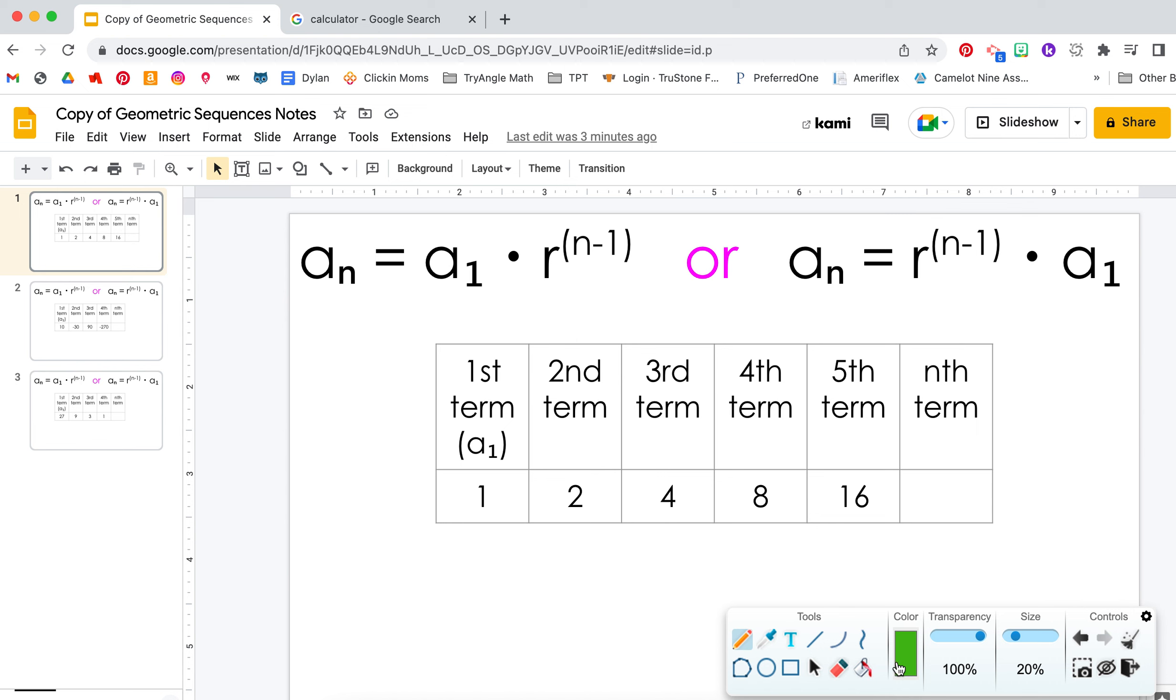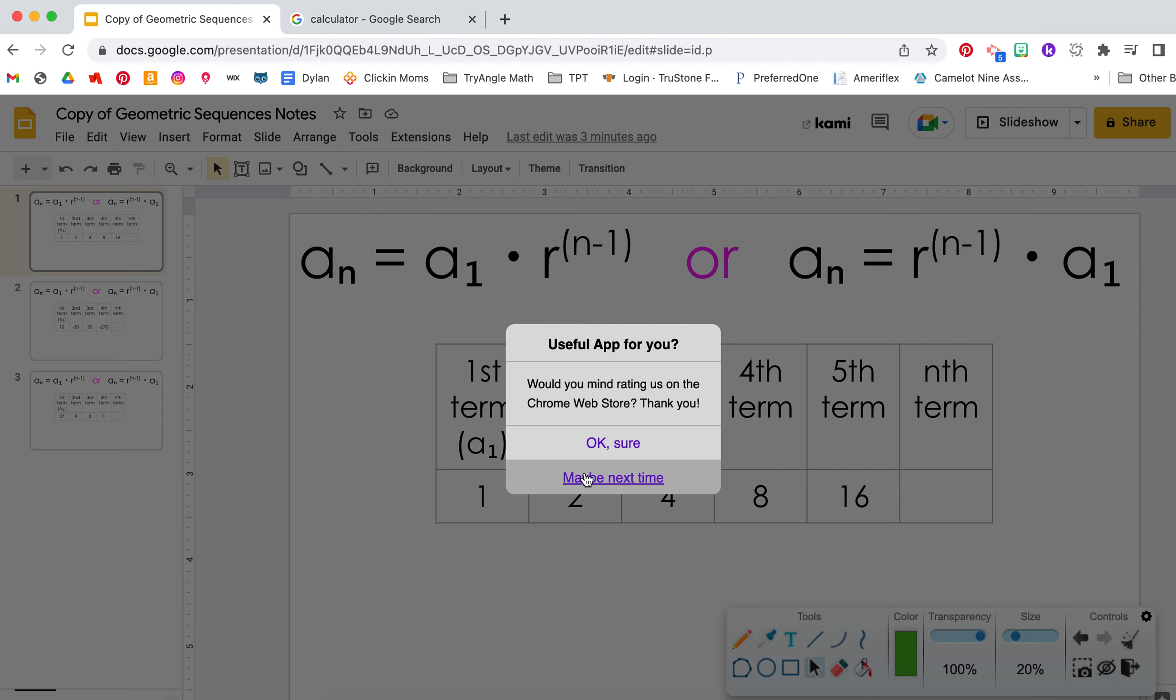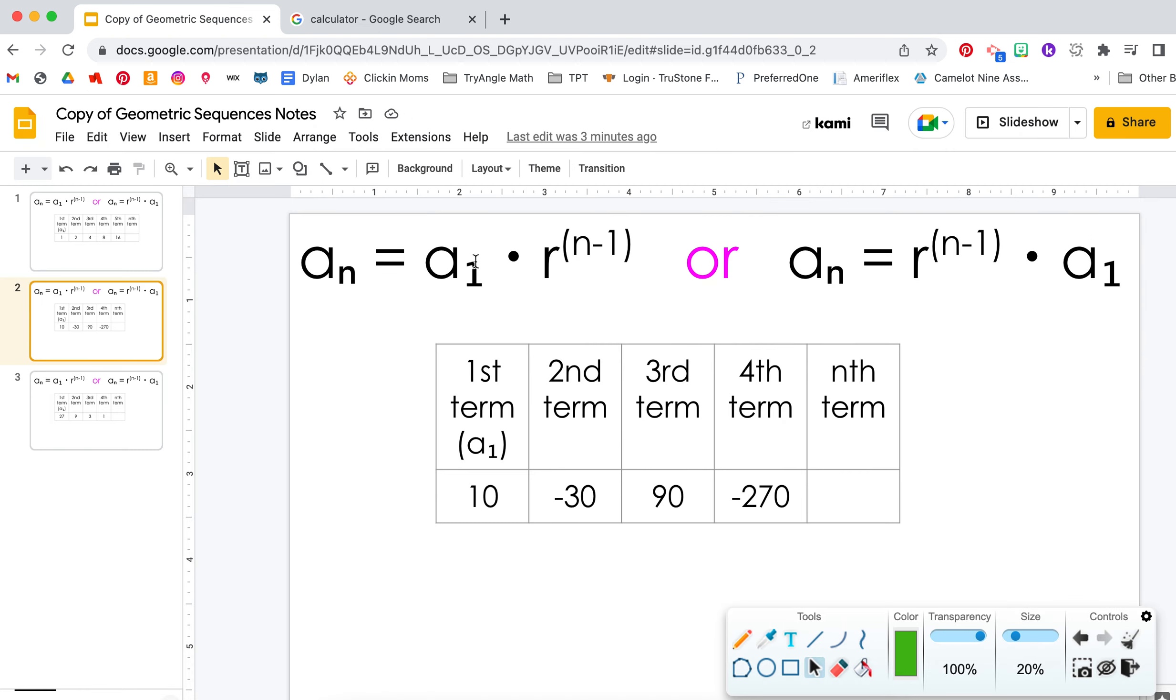Let's try another one. So this one, what are we multiplying by? Well, 10 times 3 is 30, but it must be a negative, because a positive times a negative is a negative. Let's just double check it right here. Negative times negative is positive, and 30 times 3 is 90. So the common ratio is negative 3.